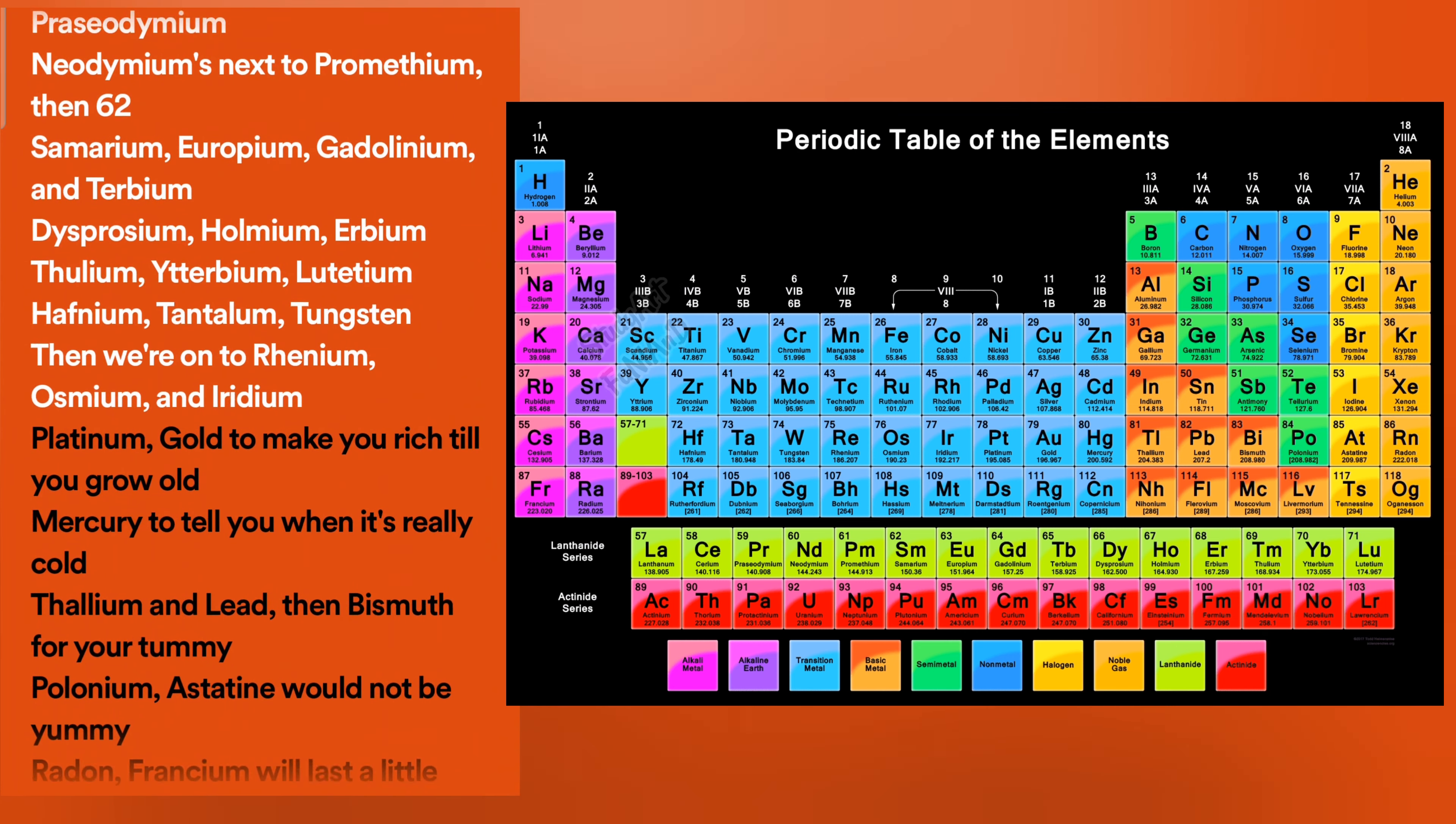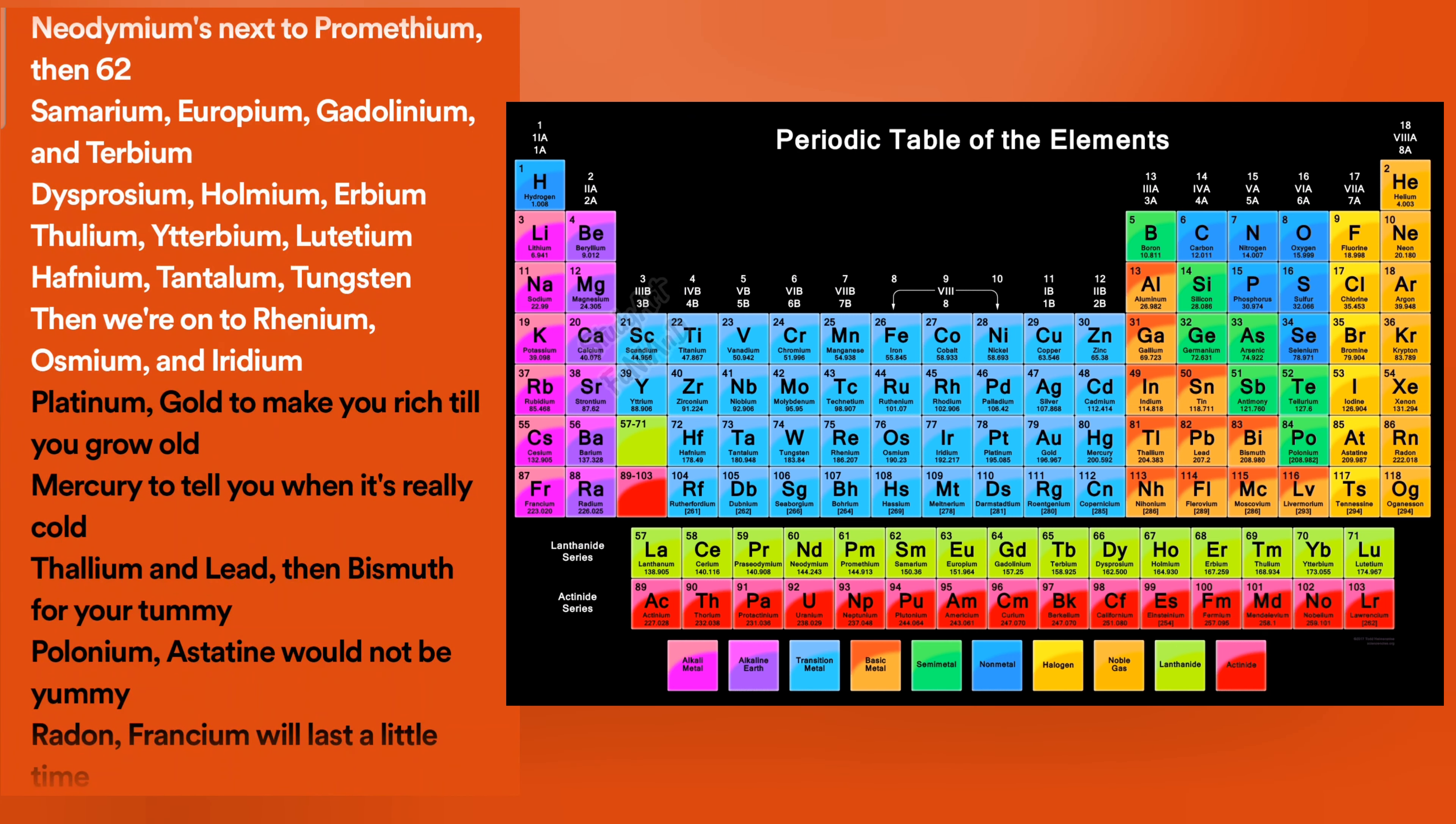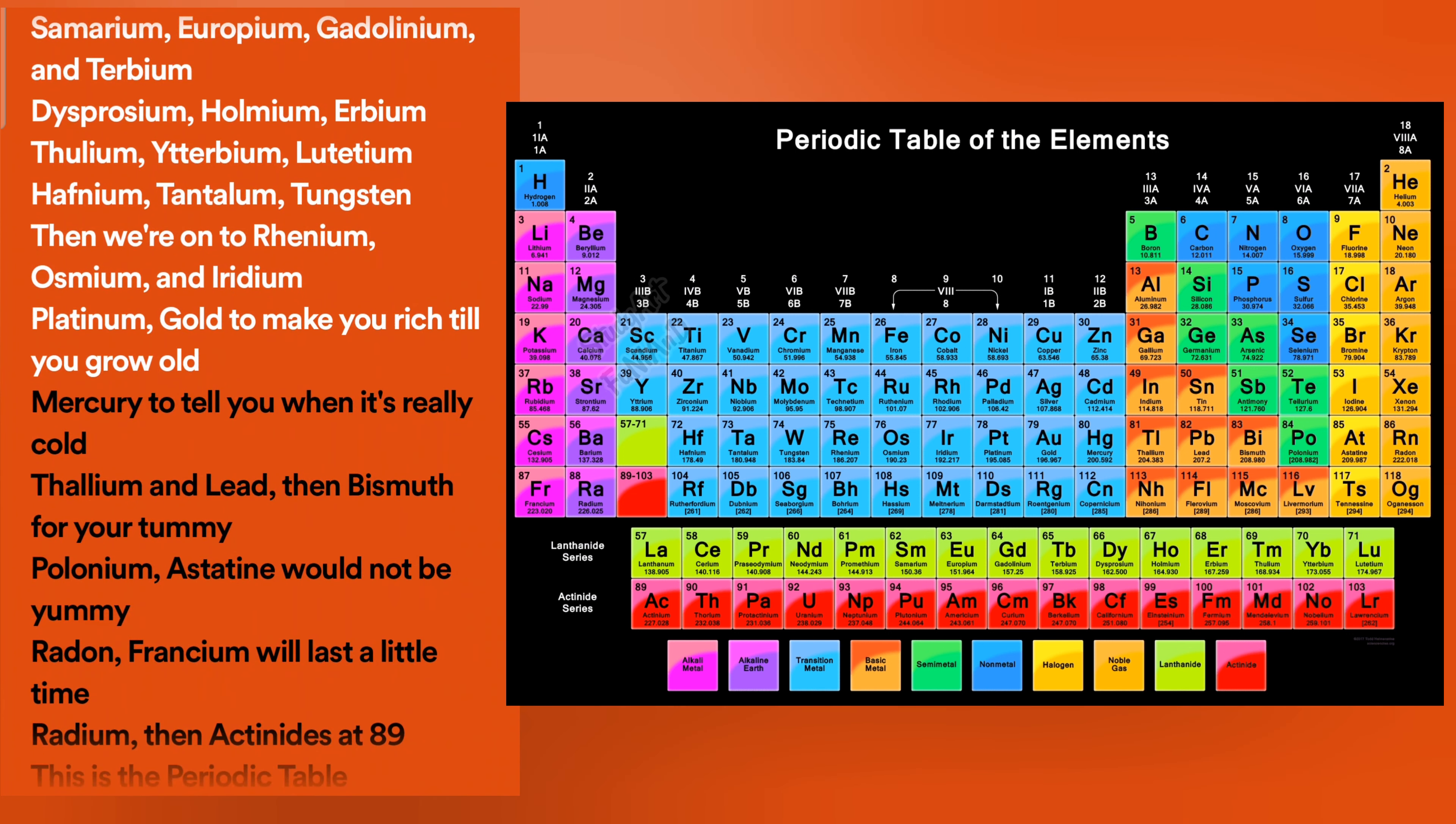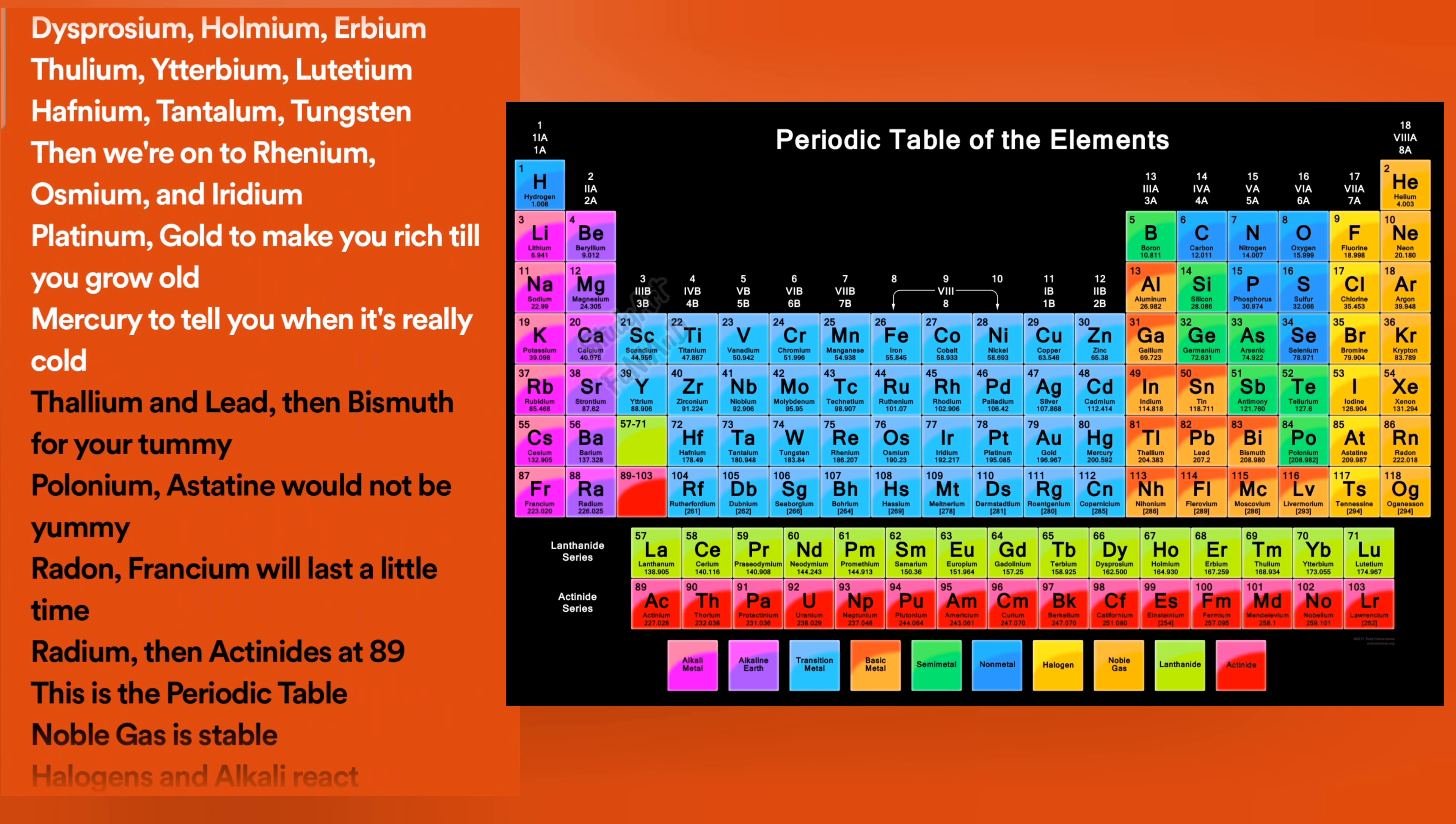Hafnium, tantalum, tungsten, then we're on to rhenium, osmium and iridium. Platinum, gold to make you rich till you grow old. Mercury, to tell you when it's really cold.